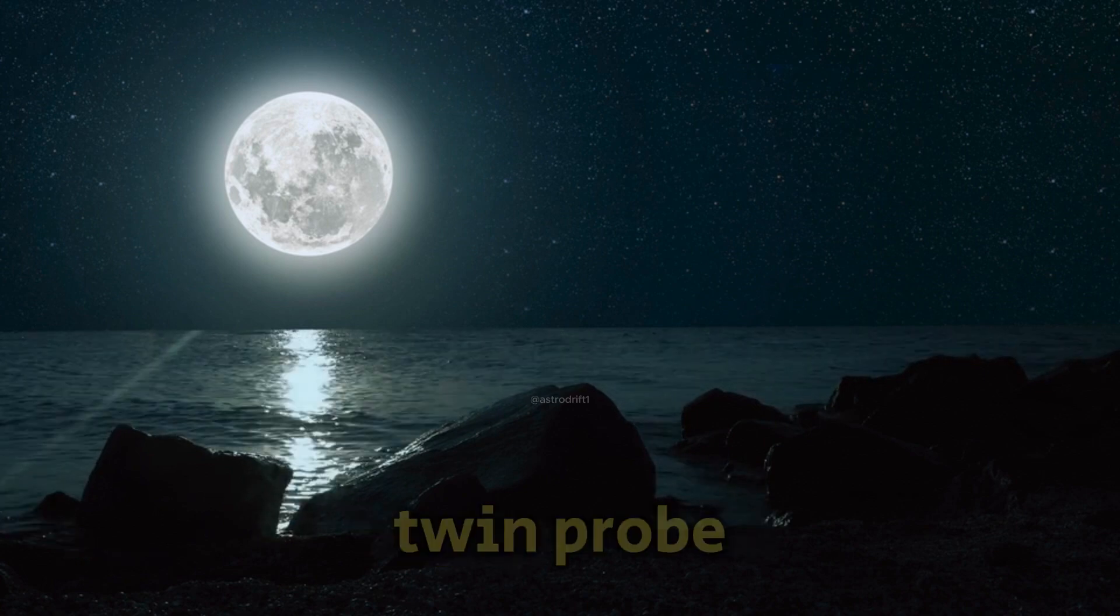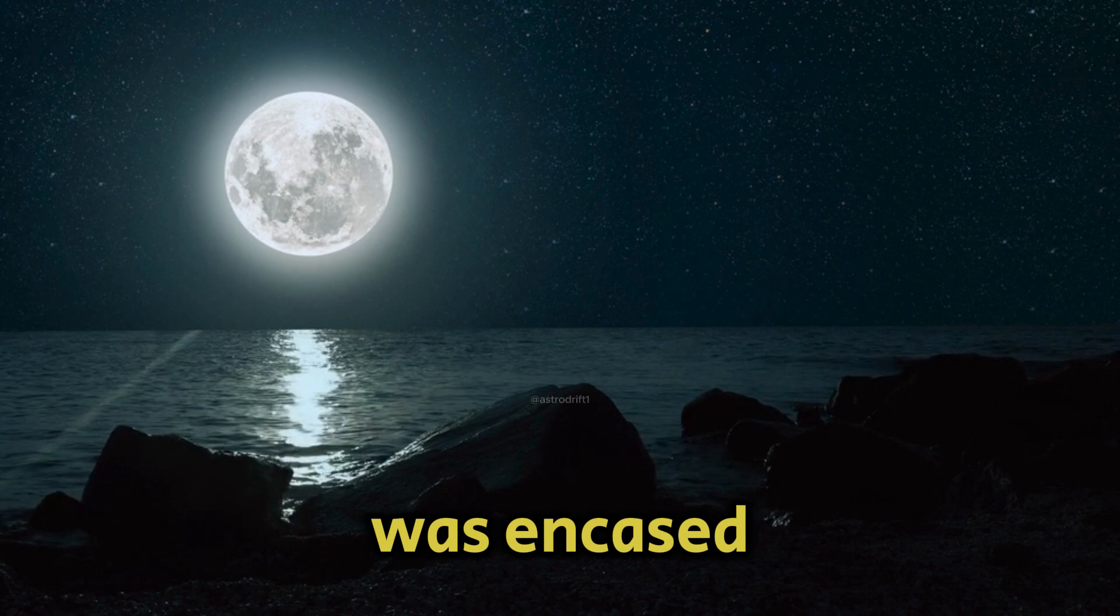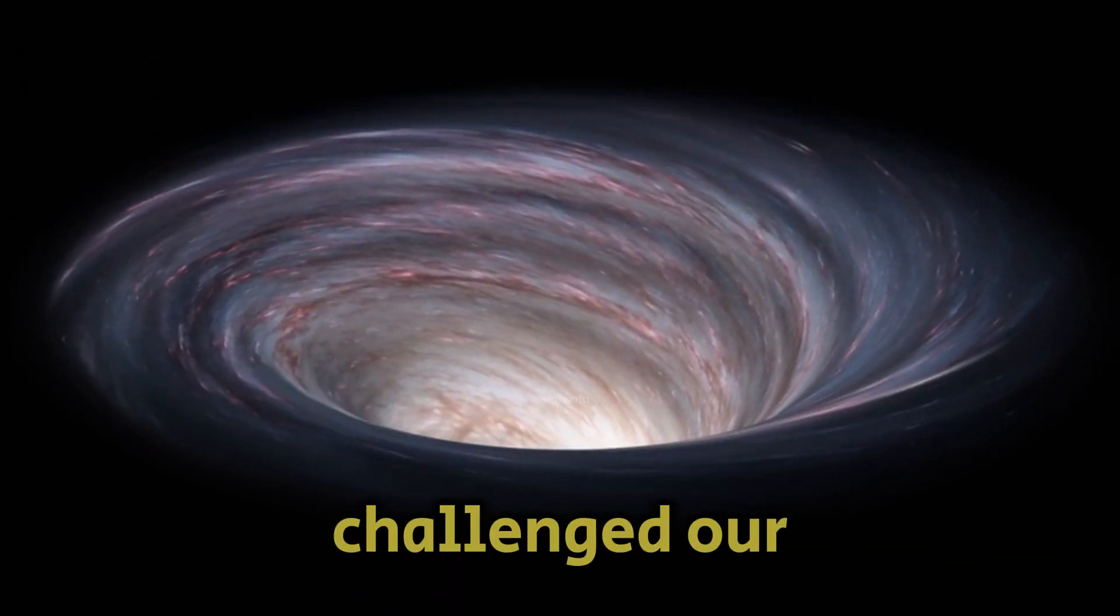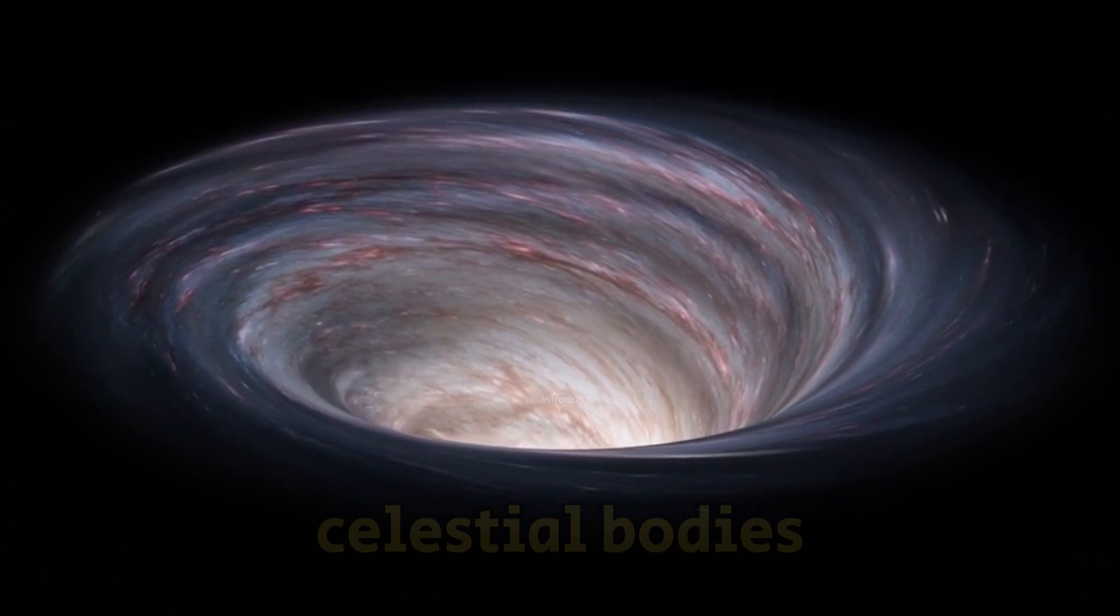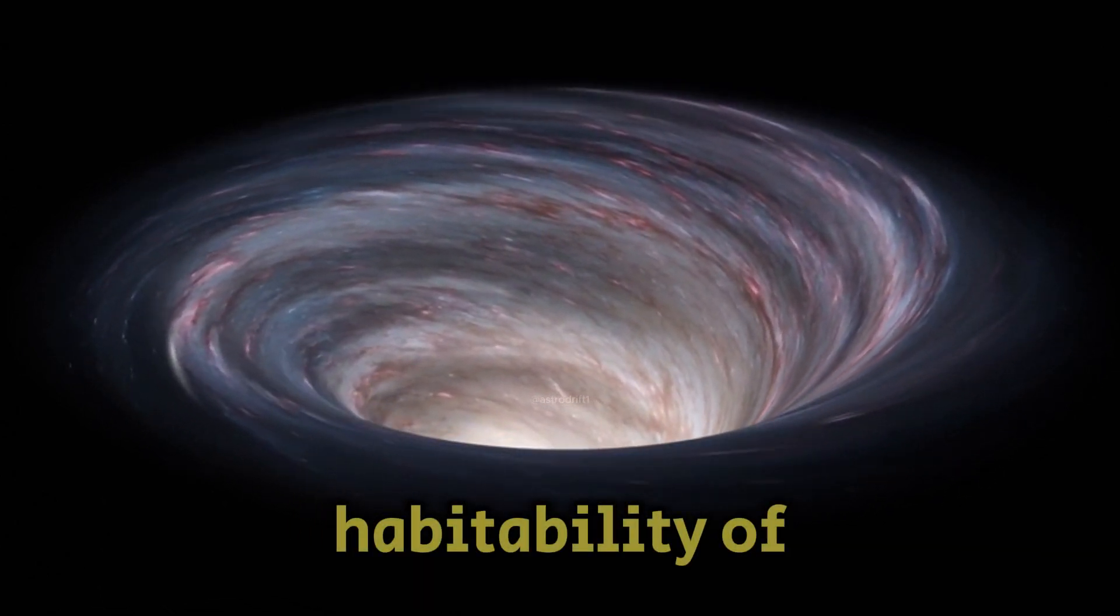Voyager 1's twin probe further revealed that Europa, one of Jupiter's 53 named moons, was encased in an icy shell over 60 miles thick. This discovery challenged our previous assumptions about distant celestial bodies and sparked a new wave of curiosity about the potential habitability of icy moons.